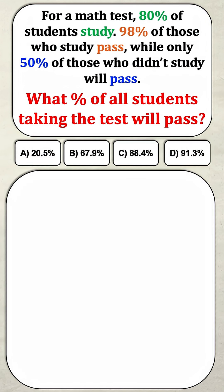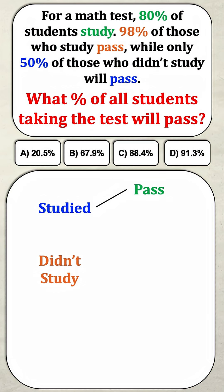In order to solve this, let's draw a simple tree diagram showing all of the possible outcomes. You either studied or you didn't study, and if you studied you either passed the test or you failed the test. And if you didn't study, you have the same outcomes — you either passed or you failed.